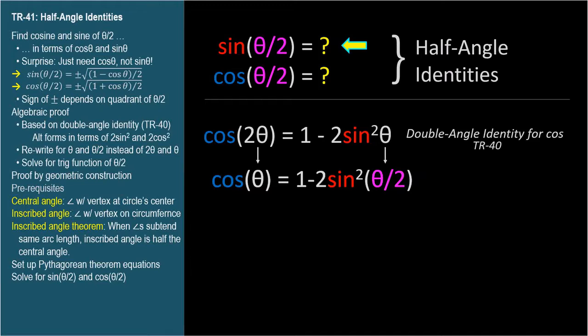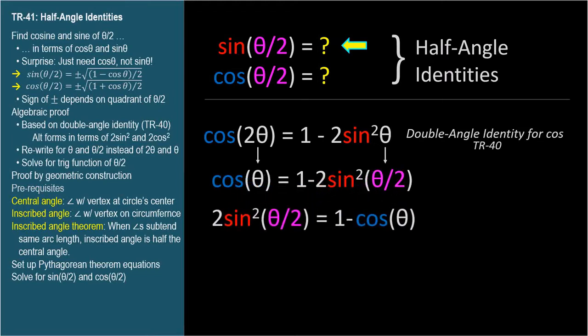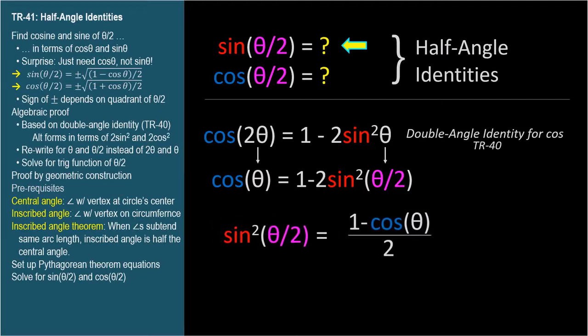It's the double angle identity written where the largest angle is theta instead of 2 theta. Rearranging to get theta over 2 on the left side: 2 sine squared theta over 2 equals 1 minus cosine theta. Dividing both sides by 2 gives sine squared theta over 2 equals 1 minus cosine theta divided by 2. Taking the square root of both sides: sine theta over 2 equals plus or minus the square root of 1 minus cosine theta over 2. The plus or minus sign depends on the quadrant in which theta over 2 lies.